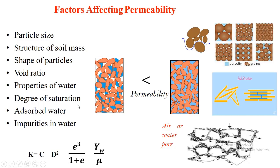Properties of water refer to what type of pore fluid is present. Regarding degree of saturation: if the soil mass has some air voids, they block the flow of water. When the soil mass is completely saturated and more water is poured in, it will easily come out from the soil mass.